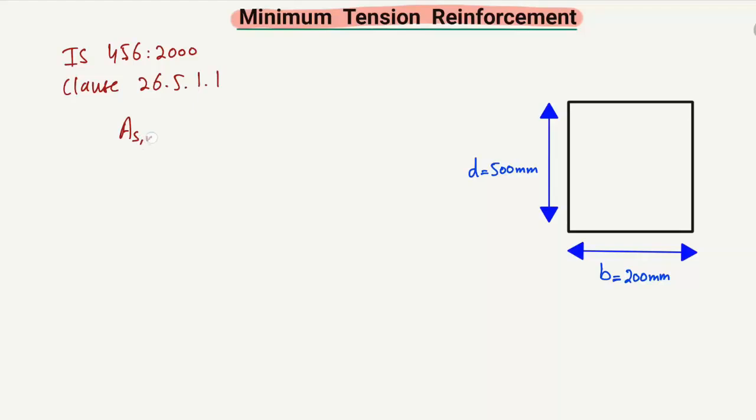This is the equation to find out the minimum reinforcement for a beam section. With the help of this equation, we will determine the minimum reinforcement for our beam cross-section. Here is an example to show how we can find out the minimum tension reinforcement for a beam section.